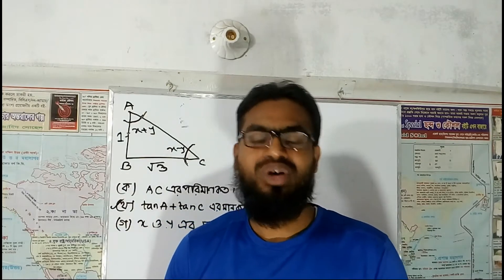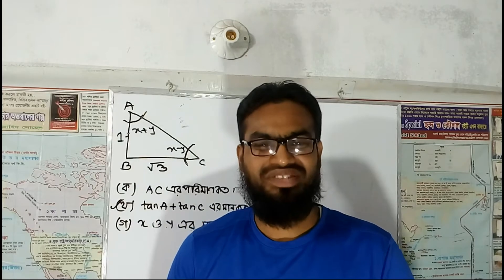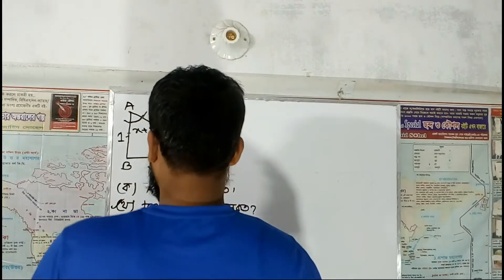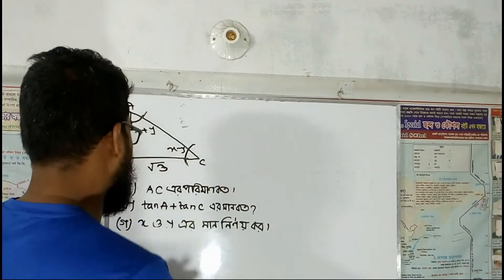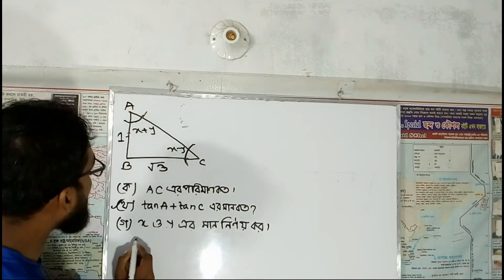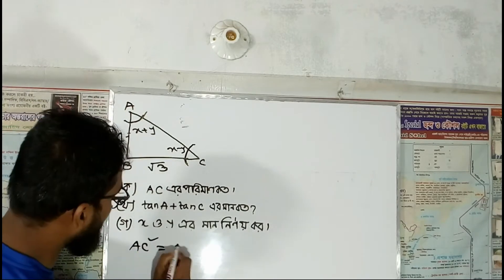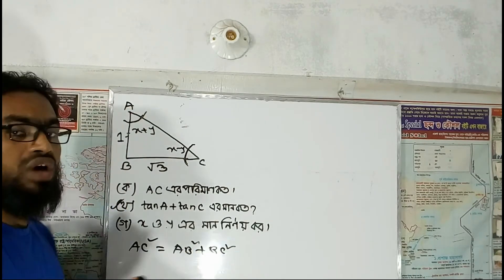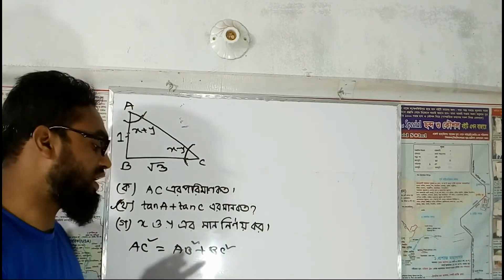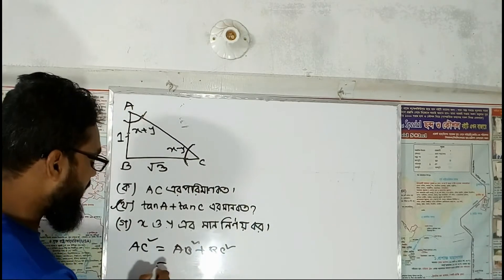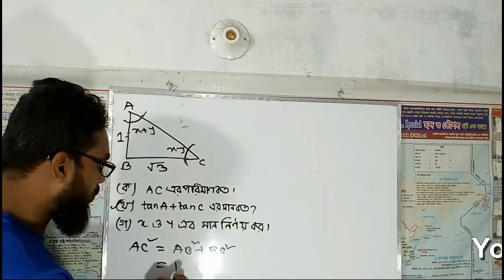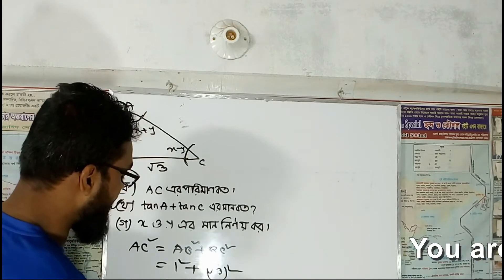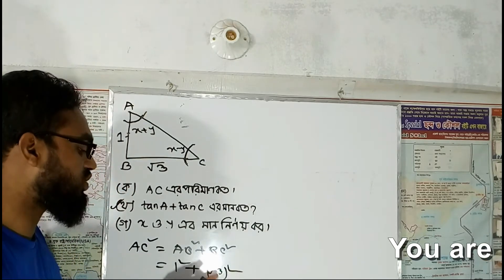We will show you how to find the value of AC on the basis of Pythagoras' law. AC squared equals AB squared plus BC squared. That means root over 3 — so root over 3 squared plus 1 equals 3 plus 1 equals 4.